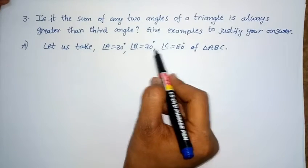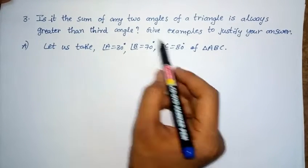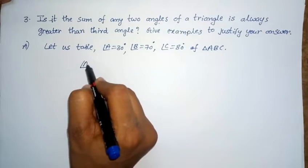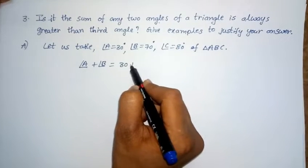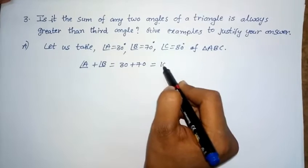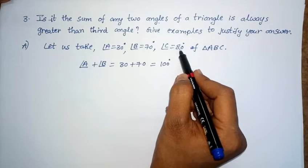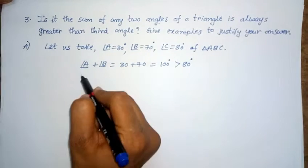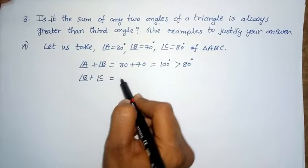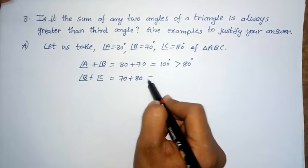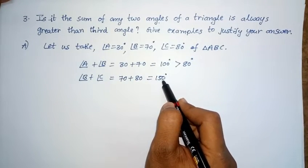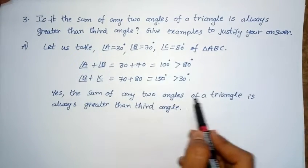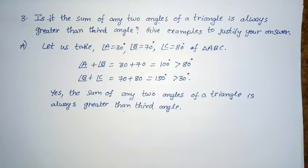In the problem, they are asking the sum of two angles is always greater than the third angle. Angle B plus angle C equals 150 degrees. 150 degrees is greater than first angle 30 degrees. So the answer is yes — the sum of any two angles of a triangle is always greater than the third angle.